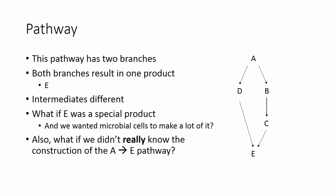In this case, we have a pathway here. It's a branch pathway and has two branches, starting with A and ending with E. The intermediates in each pathway are different, each branch of the pathway. And each branch of the pathway can actually be thought of as a separate pathway.